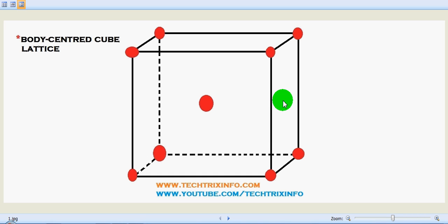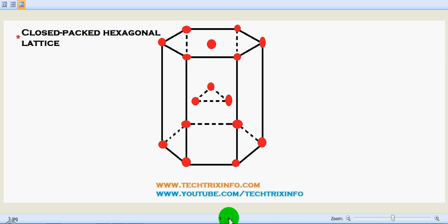Hi, today we will be talking about space lattices with the help of this animation. So we have body centered cube lattice over here. This is the face centered cube lattice and this is close-packed hexagonal lattice.